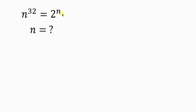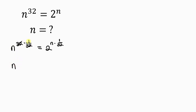Our first step will be to separate the variable. We have on the left n to the 32. To separate the exponent 32 from n, I'm going to multiply it by 1 over 32. And remember, whatever you do to the left, you do to the right. So I'll also be multiplying the exponent on the right by 1 over 32. So this equals 2 to the n times 1 over 32. Notice that 32 cancels 32, so we have n to the 1.